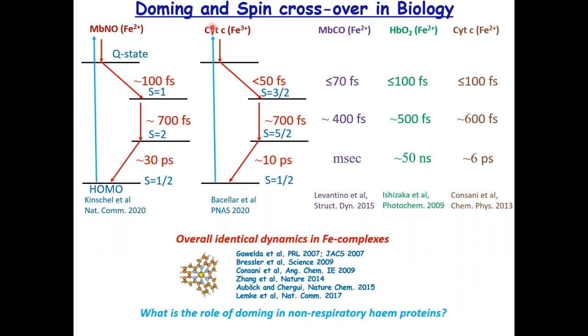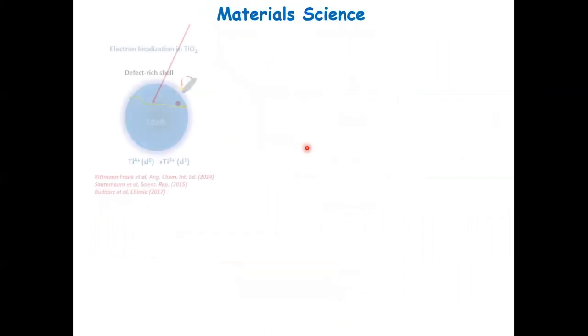However, some of these proteins, like cytochrome C, ferric cytochrome C, is not involved in the respiratory function. So what is the role of doming in these heme proteins? By the way, I want to stress that the doming is independent of whether you dissociate the ligand or not, or whether you have a ferric or a ferrous state. It's occurring in all cases. So this is still an open question. What is the role of doming in non-respiratory heme proteins?